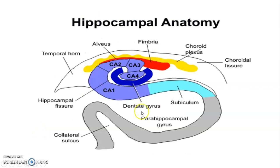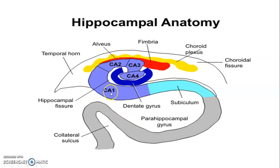Again, the hippocampus — this is a cross-section showing the hippocampus S-shaped. This is the hippocampal fissure. It has four parts: CA1, CA2, CA3, and CA4. Together with the dentate gyrus and the indusium griseum, they form the hippocampal formation. CA stands for cornu ammonis.